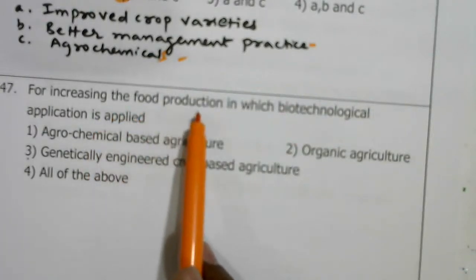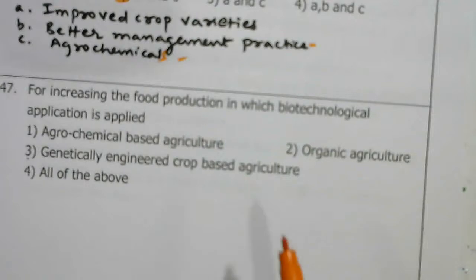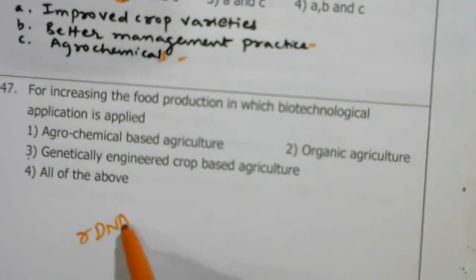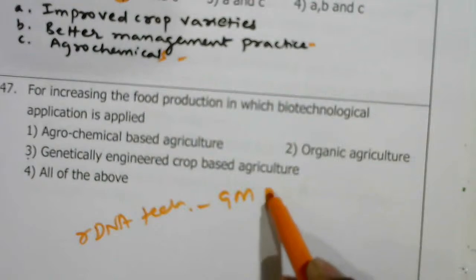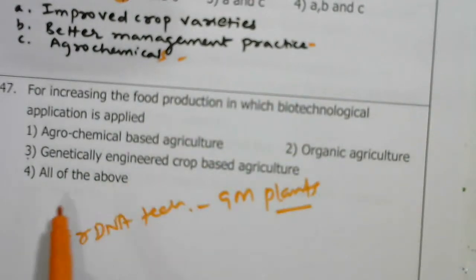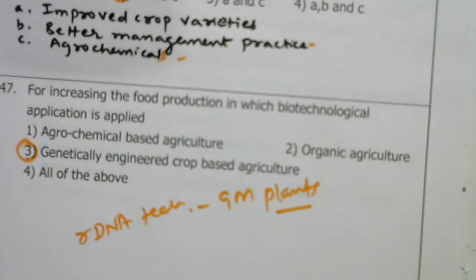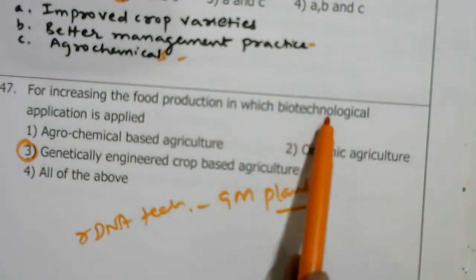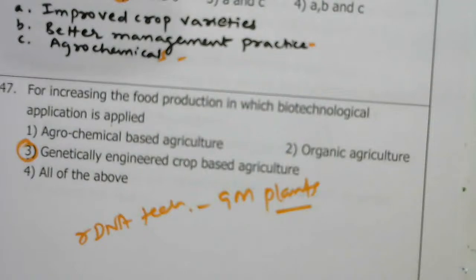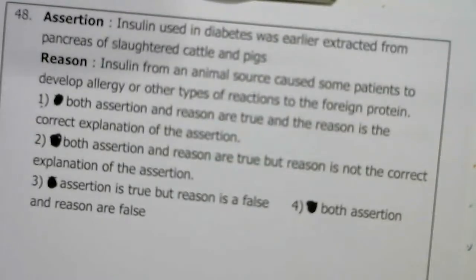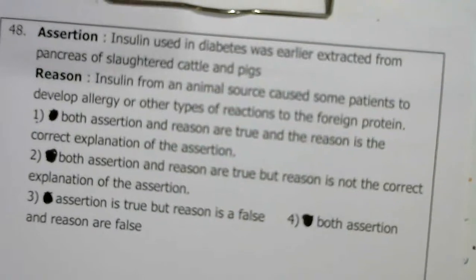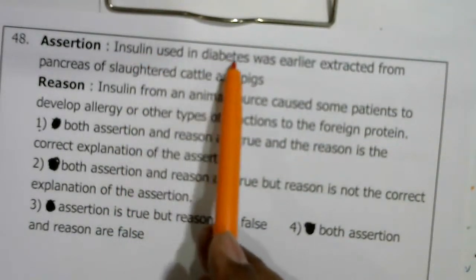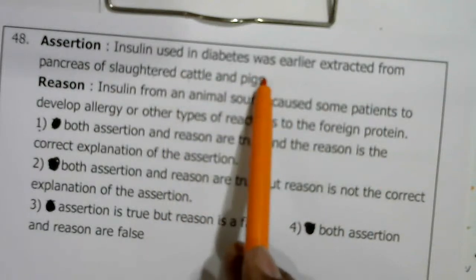For increasing food production, the biotechnological application applied is genetically engineered crop-based agriculture. Agriculture is of three types: chemical-based, organic, and genetically engineered crop-based. So for increasing food production we apply genetically engineered crop-based agriculture — the third option.